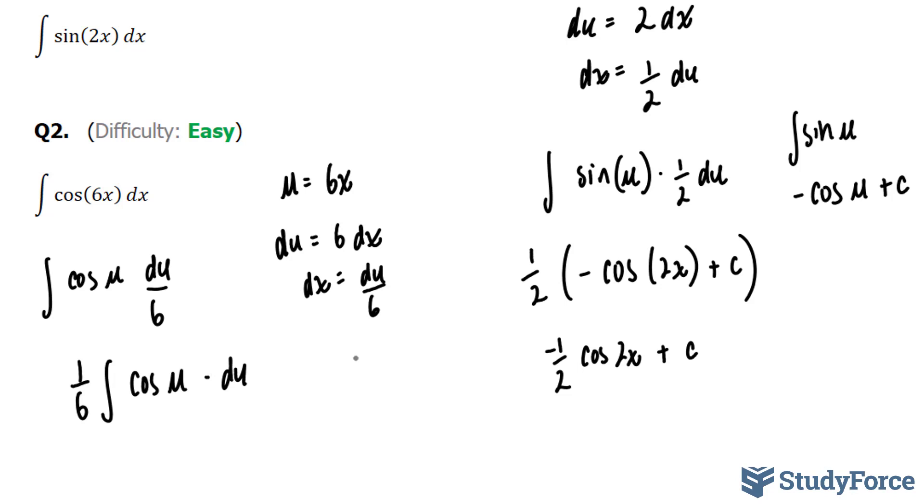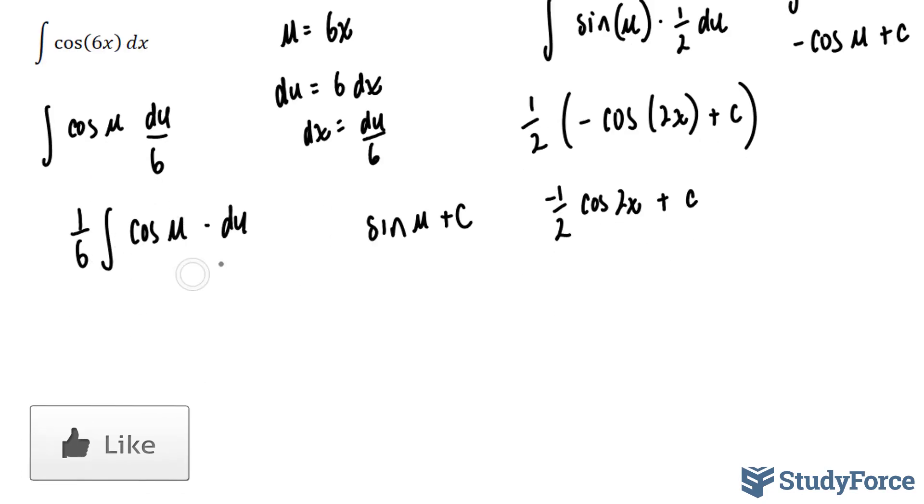Now, cosine u has the antiderivative of simply sine u. So I'm going to replace all of this with 1 over 6, bracket, sine u. I don't need to use u anymore. I can replace it with the 6x, because du is gone, plus c.